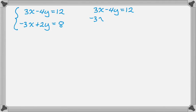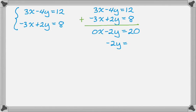3x minus 4y equals 12, negative 3x plus 2y equals 8, and I want to add down. If I add 3x and negative 3x, that's zero x's, then I get negative 2y, and then 20. This gives me negative 2y equals 20. Dividing both sides by negative 2, y is negative 10.